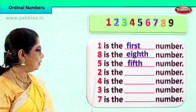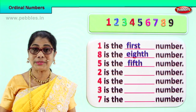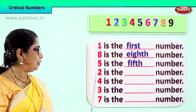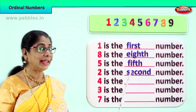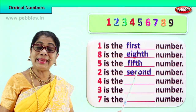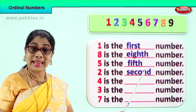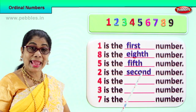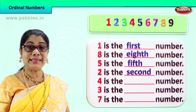Next, look at this number — number two. Let's see what position that comes. First, second. Number two is the second number. Spell second: S-E-C-O-N-D. Spell second again: S-E-C-O-N-D. Number two is the second number.